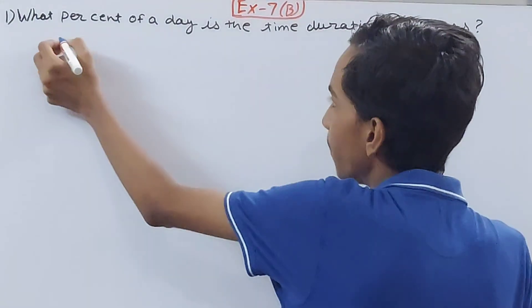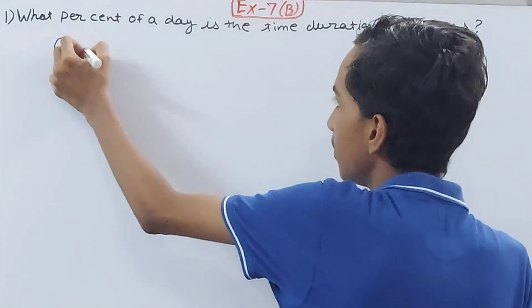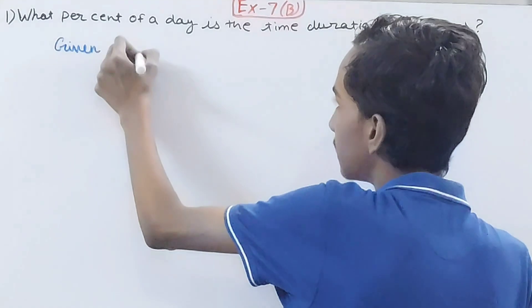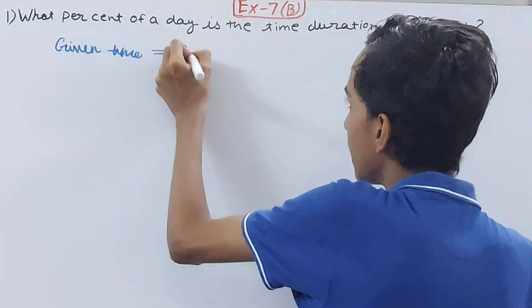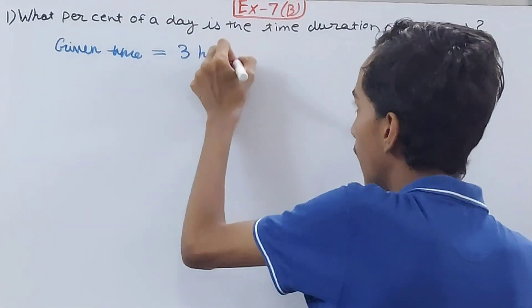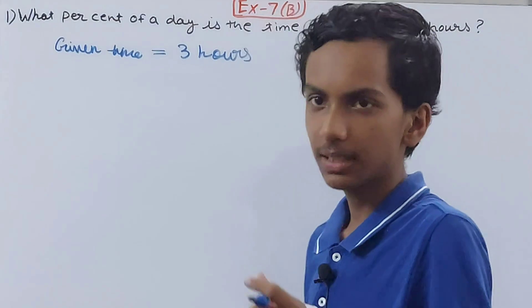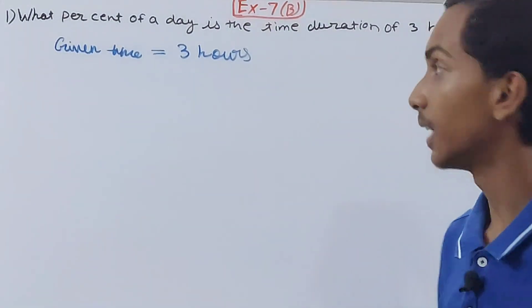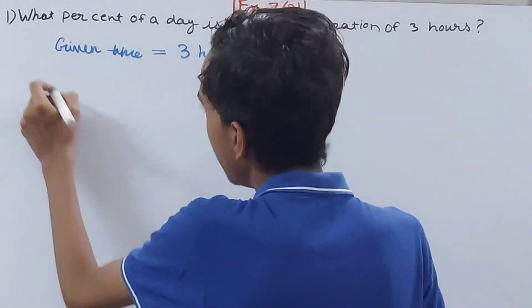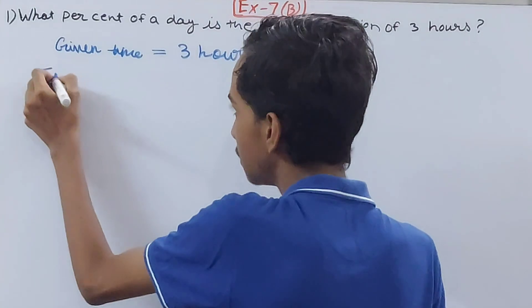See that they have given us this time that is of 3 hours, and we have to represent this as a percentage of the entire day. In the entire day, how much time is there?